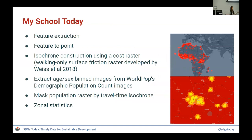This is the basic methodology. We extract features from OpenStreetMap and create isochrone rasters showing zero to 30 minutes, 30 to 60 minutes, and over 60 minutes walking travel time from school locations. We also have disaggregated age and sex population distributions from WorldPop. From those two datasets, we perform zonal statistics, and for administrative level-one boundaries we estimate how many students have access to schools, segmented by those travel time categories.